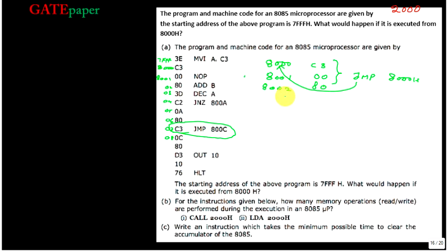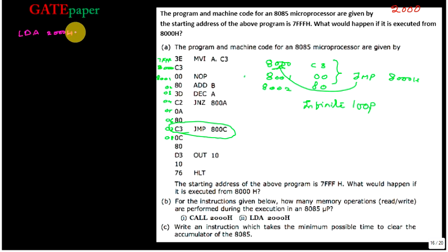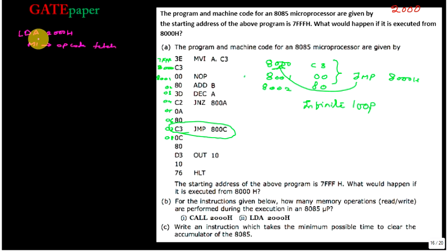If the program is executing from 8000H, it finds an infinite loop. Now the second question: for the instructions given below, how many memory operations — read or write — are performed during execution of CALL 2000H and LDA 2000H? First we'll go for LDA 2000H. LDA means load accumulator with the data present at memory location 2000H. The first machine cycle is opcode fetch.